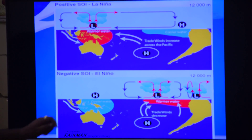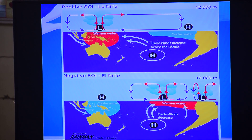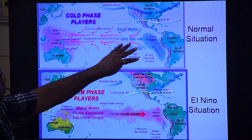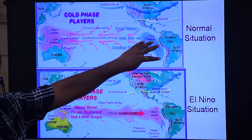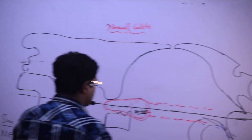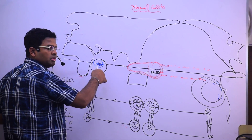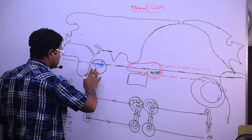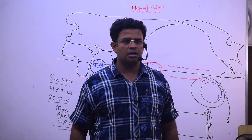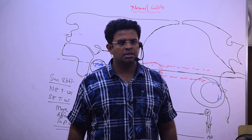The colder water becomes even more pronounced compared to normal conditions. Near the Peruvian coast in the eastern Pacific, the Peruvian cold current becomes very strong. Adiabatic descending air creates more moisture in the western Indian Ocean, and therefore the southwest monsoon will carry more moisture, causing India to receive more than normal rainfall. This is known as La Niña.